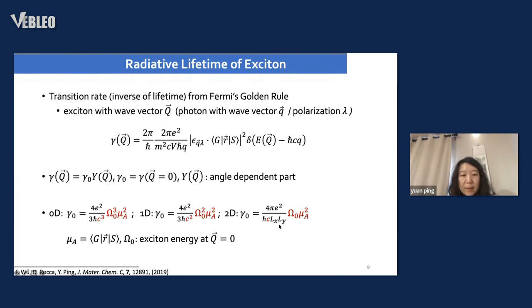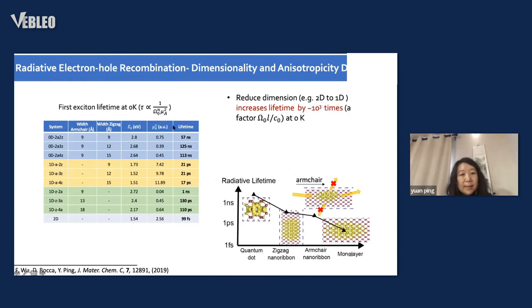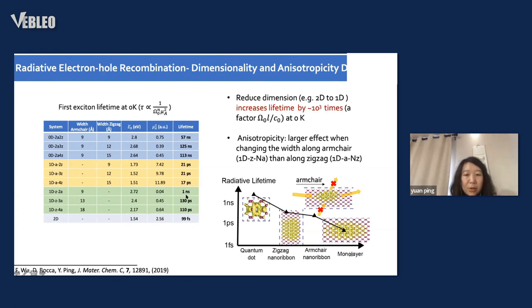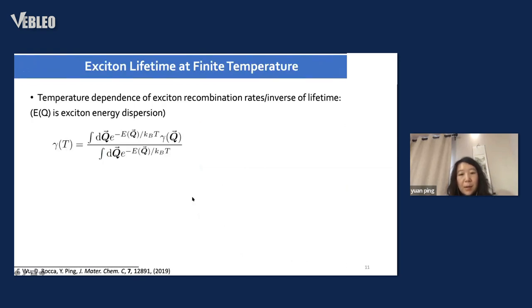I want to point out the exciton lifetime we developed by solving the Bethe-Salpeter equation. We start from deriving the exciton lifetime, where q is the exciton momentum. This is the rate for exciton recombination, derived for different dimensional systems. We find a unique power law dependence due to momentum-energy conservation. For example, for black phosphorus, exciton lifetime varies from 0D to 1D and 2D - 0D is nanosecond scale, 1D is picosecond scale, and 2D is nanosecond scale.